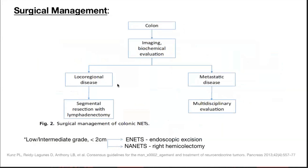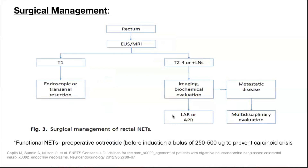For colon NETs with locoregional disease: segmental resection; metastatic disease: multidisciplinary evaluation. For low to intermediate grade tumors less than 2 cm, European Neuroendocrine Tumour Society recommends endoscopic excision whereas NANETS recommends right hemicolectomy. For rectal NETs: less than 2 cm — endoscopic or transanal resection; more than 2 cm or lymph nodes present — low anterior resection or abdominoperineal resection.